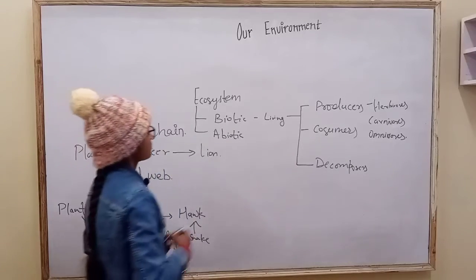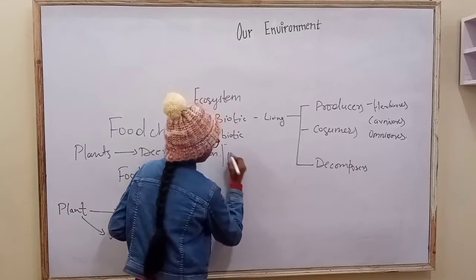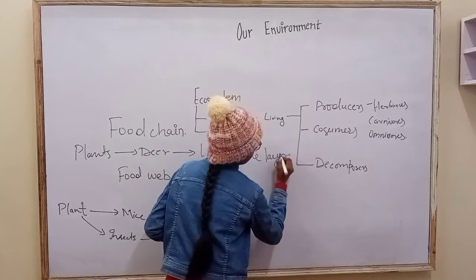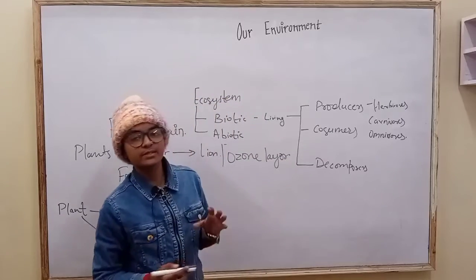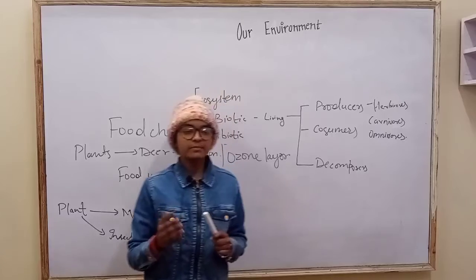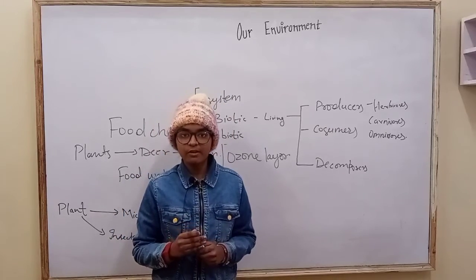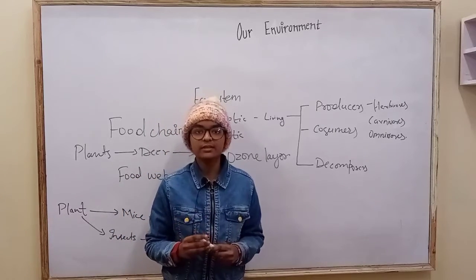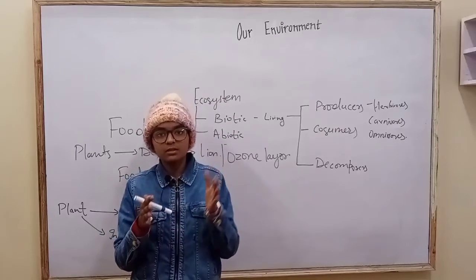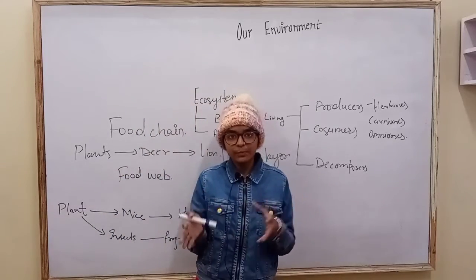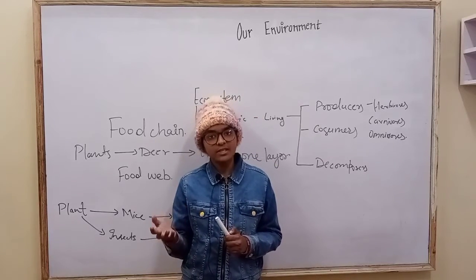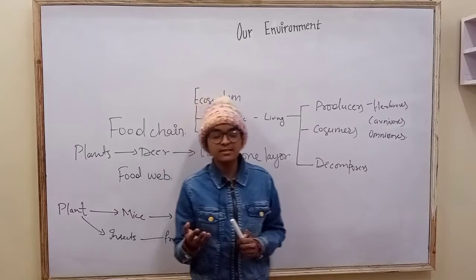Next is the ozone layer. The ozone layer is the outermost layer covering of the Earth which protects us from the sun's ultraviolet rays. If the ozone layer breaks the Earth's coverings, then we can have many diseases like skin cancers.